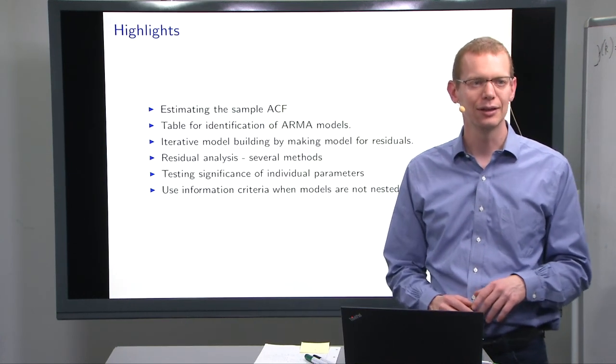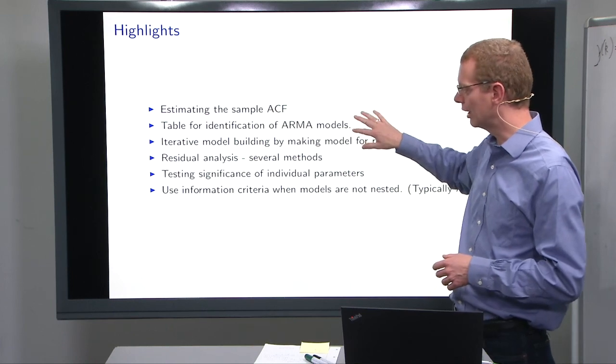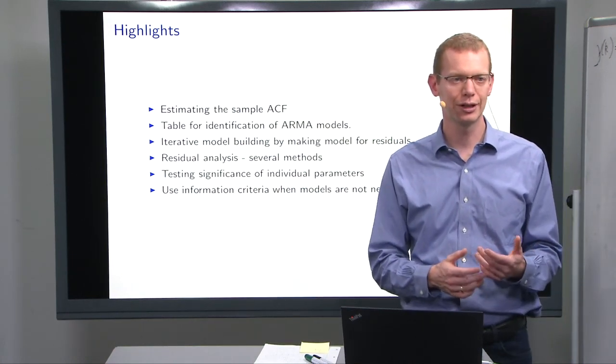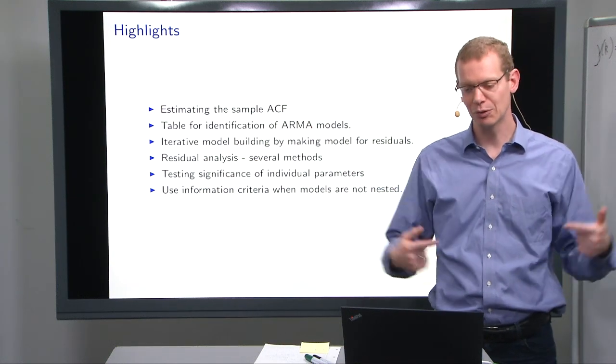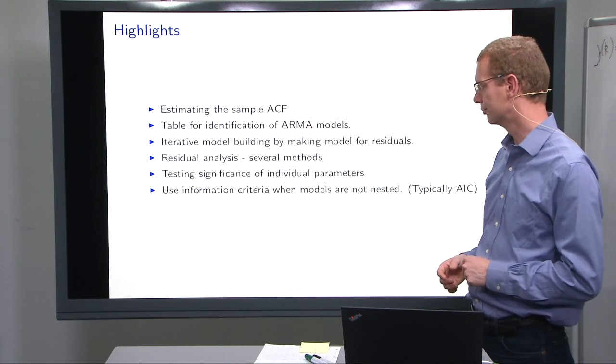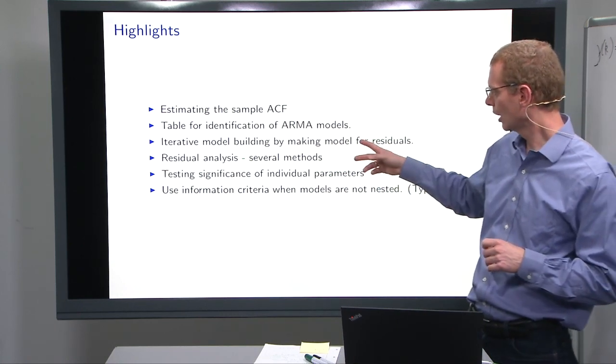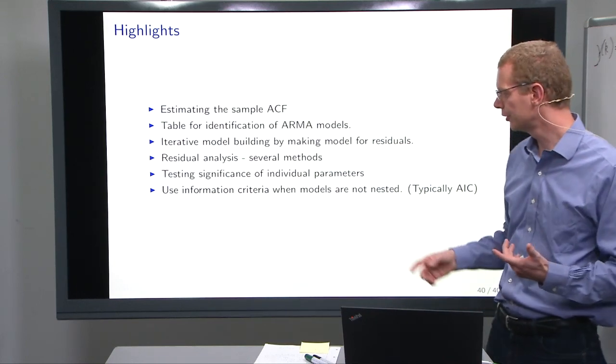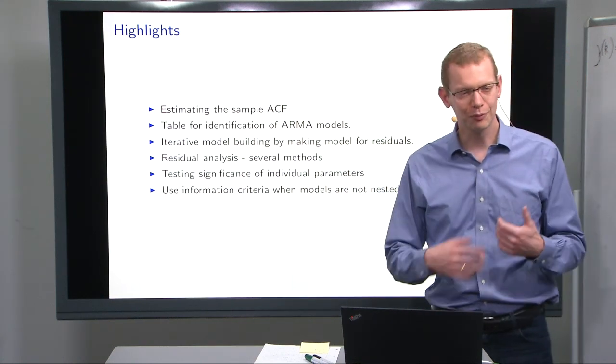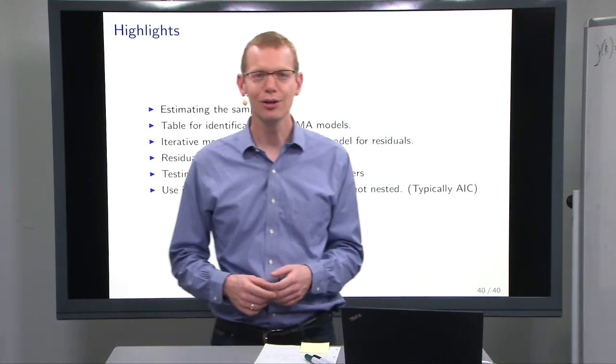I covered the last bit. So in highlights, what we looked at is how to estimate the sample autocorrelation function. We discussed the table for identifying ARMA models, how to do iterative model building by making models for residuals and then figure out what else do I need to add to the model to get to an even better model and hopefully to a model where the residuals are close enough to white noise so that you can say that you've got a good model. But you also have to keep in mind that all models are wrong, but some are useful. Showed you some tools for doing residual analysis. Showed you some testing of significant individual parameters and then how to use information criteria in particular when things are not nested. So that was all for now. See you around.